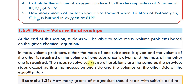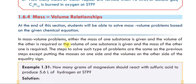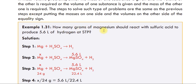The steps to solve such types of problems are the same as the previous steps, except putting the mass on one side and the volume on the other side of the equality. Find the mass of magnesium needed to produce 5.6 liters of hydrogen at standard temperature and pressure.